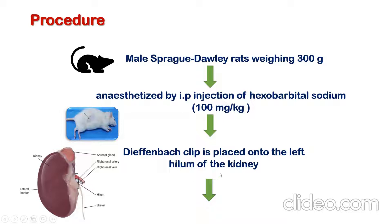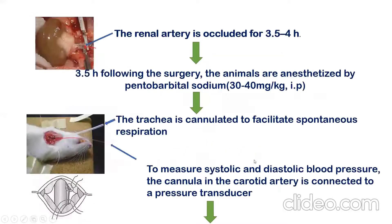So in the left kidney, you can put the diaphragm clamp here. Then you can find out the renal artery and the renal artery is occluded immediately. After the occlusion of the renal artery, close the animal by giving the suture and the animal gets recovered.